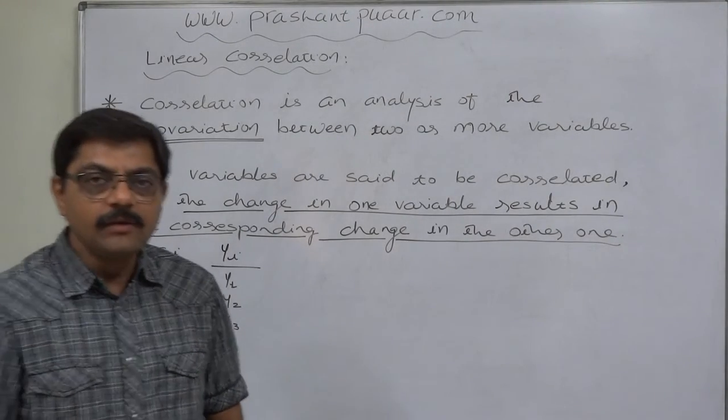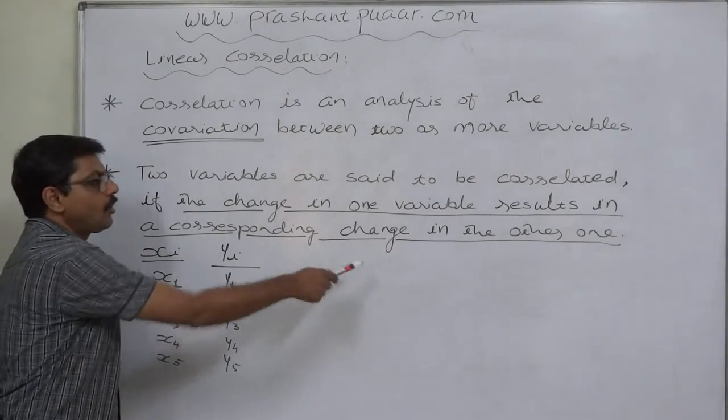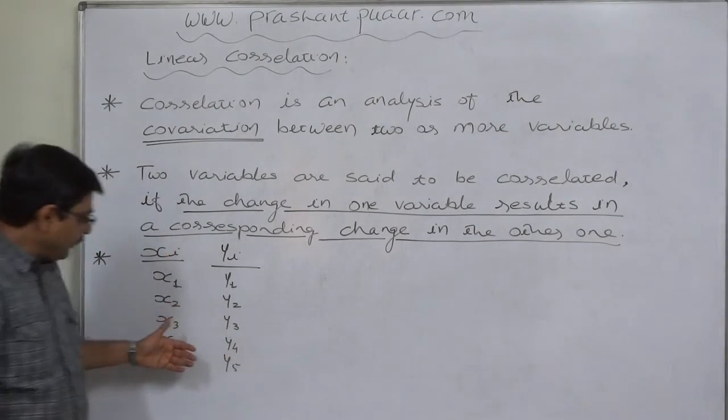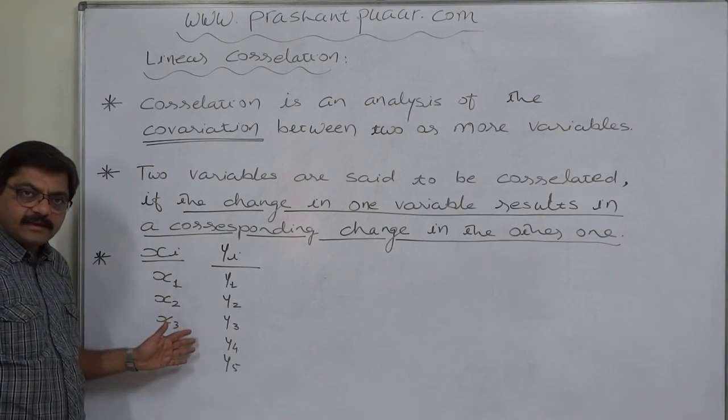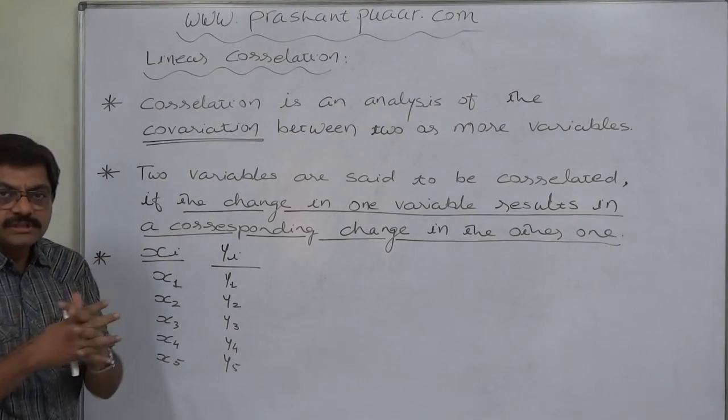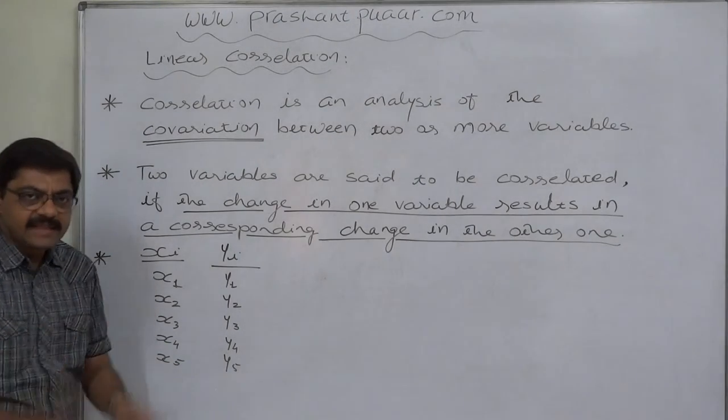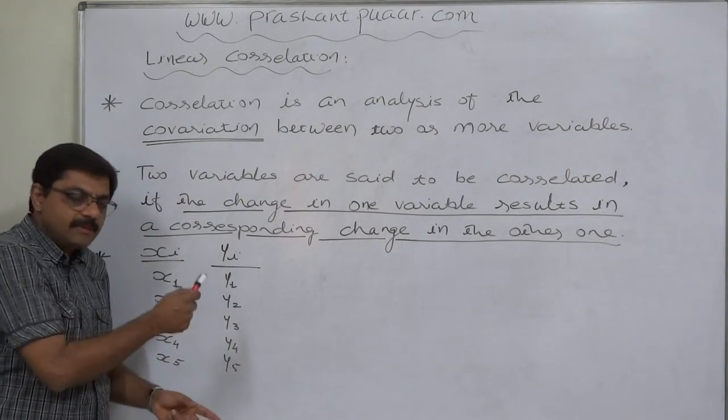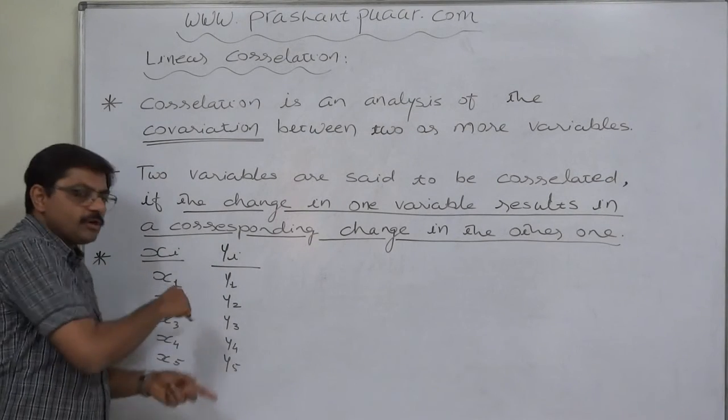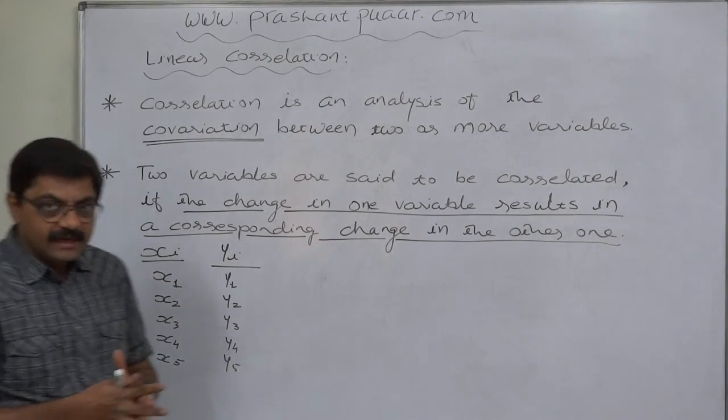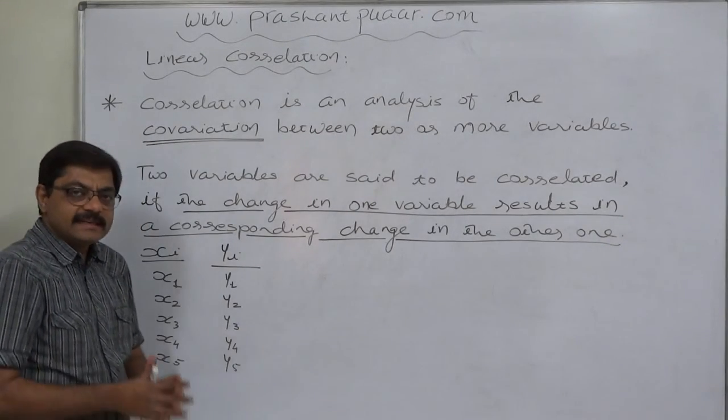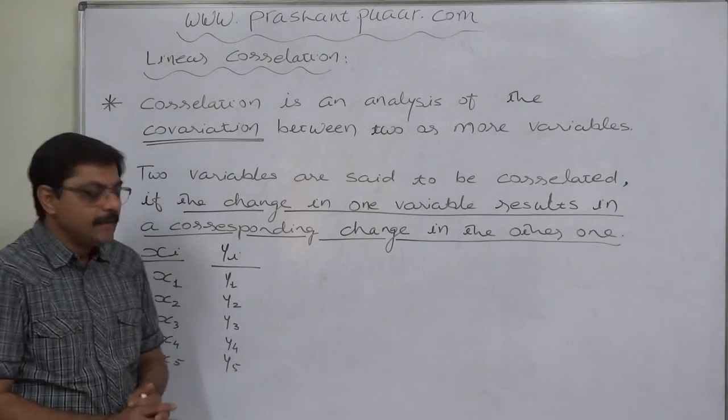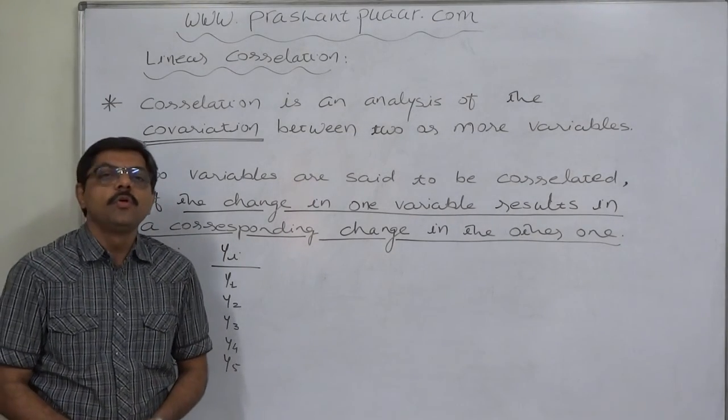Where we assume or believe this type of relationship between two or more variables, that is known as correlation in the subject statistics. In the same way, again y takes value y3 and x takes value x3, both are causes and result at the same time. In other words, at the same time x is independent variable which influences y, at the same time x is dependent variable because it is influenced by y. So x and y both are at the same time dependent as well as independent variables. Where we believe this type of relationship between at least two variables, that is known as correlation.